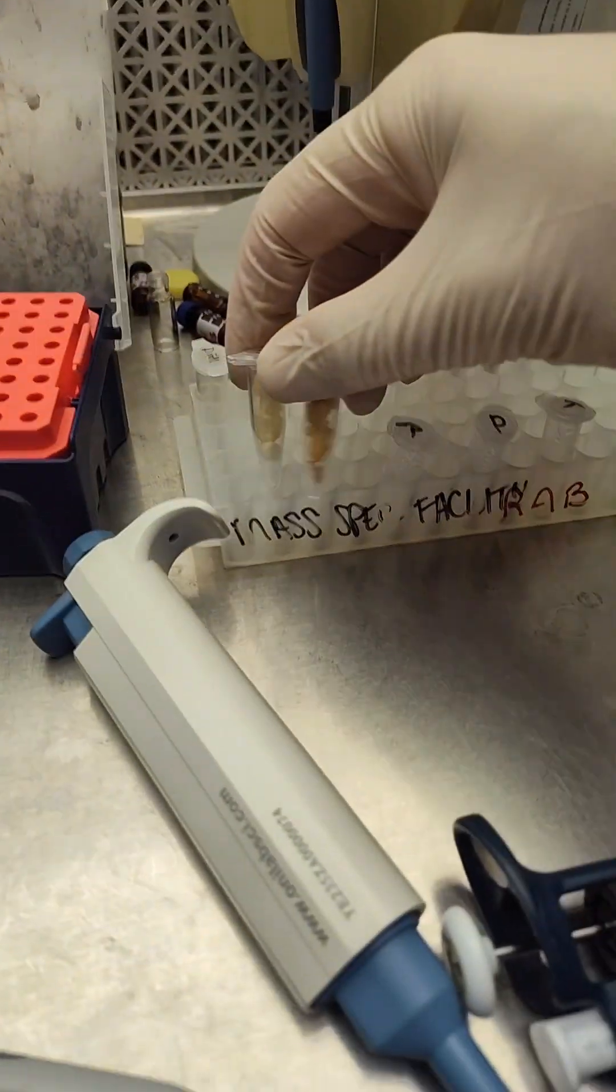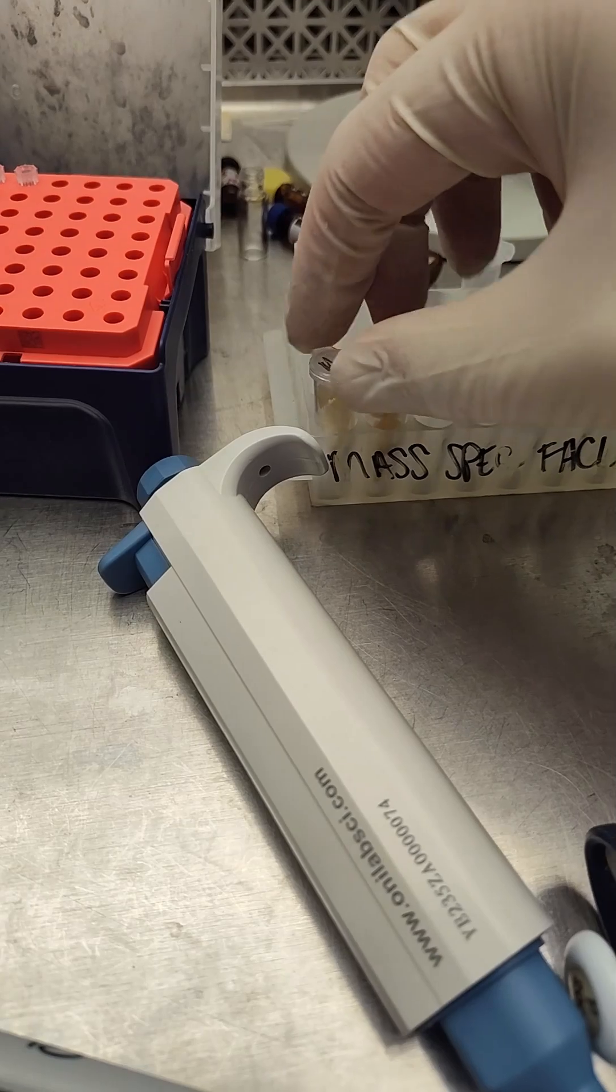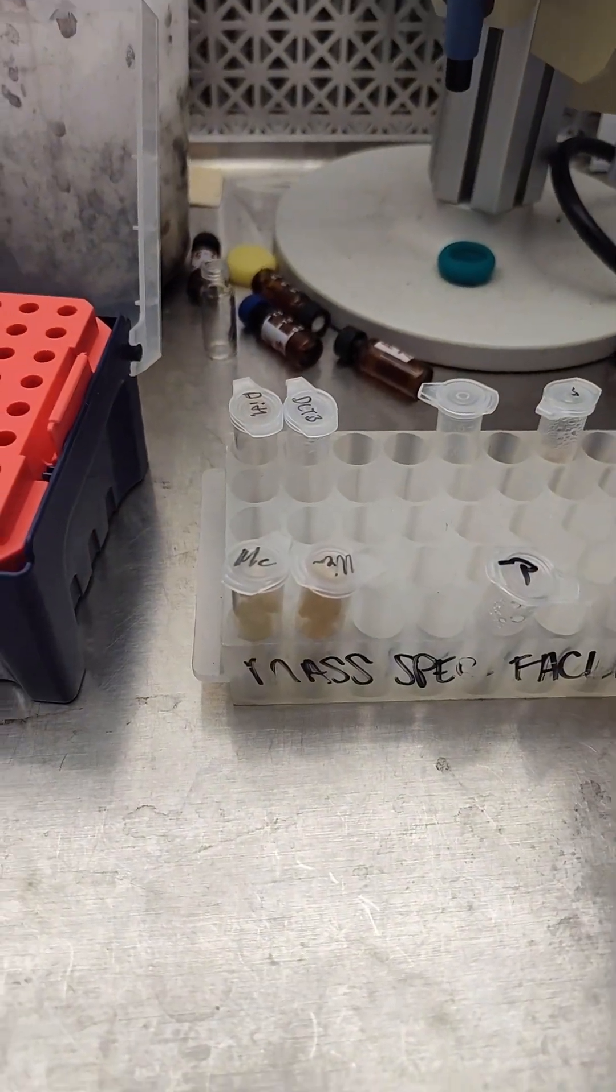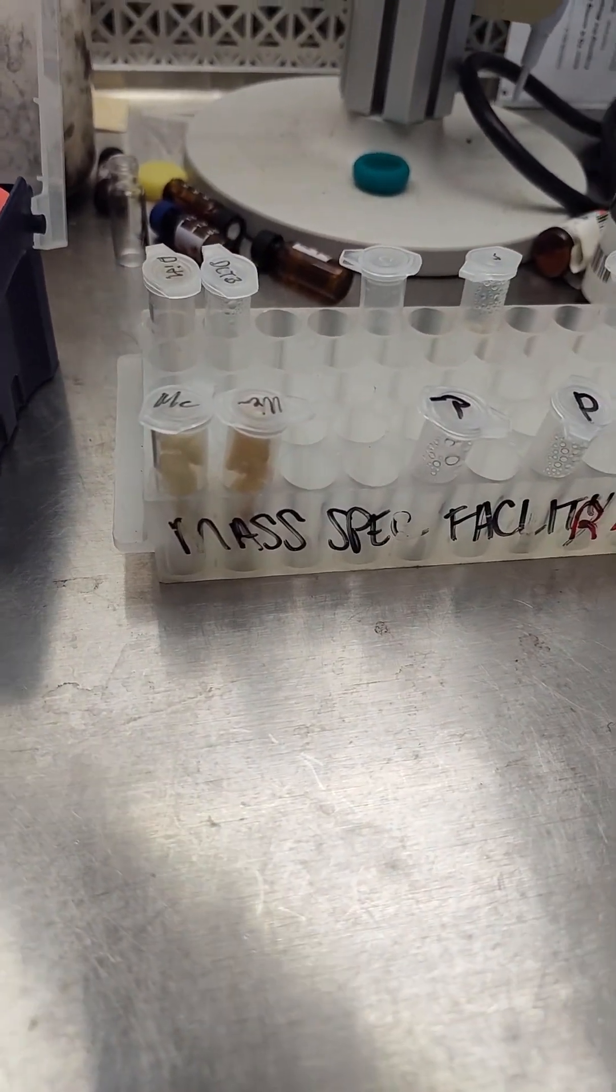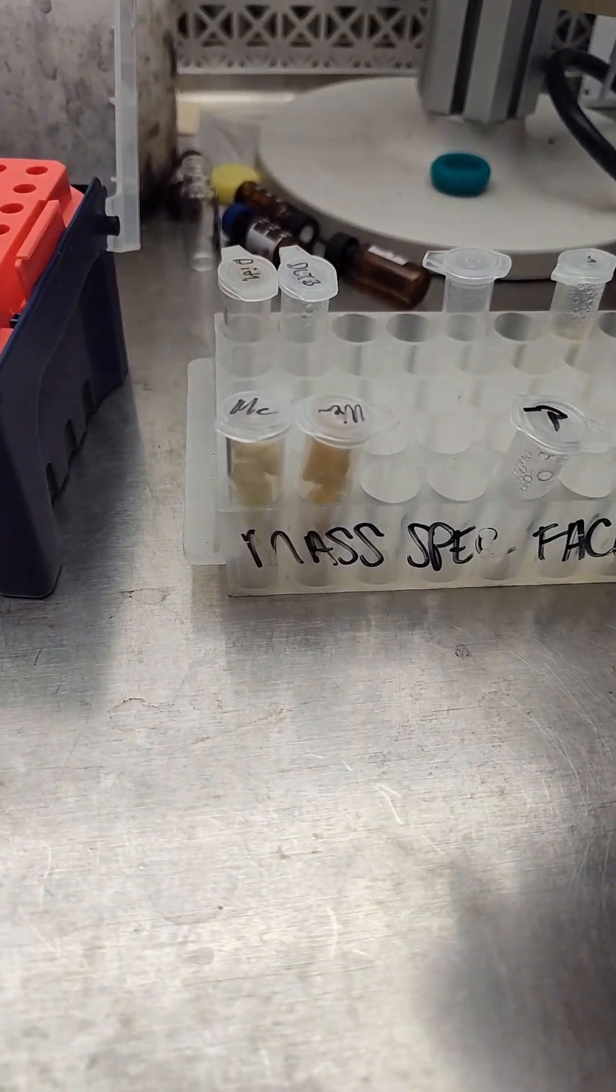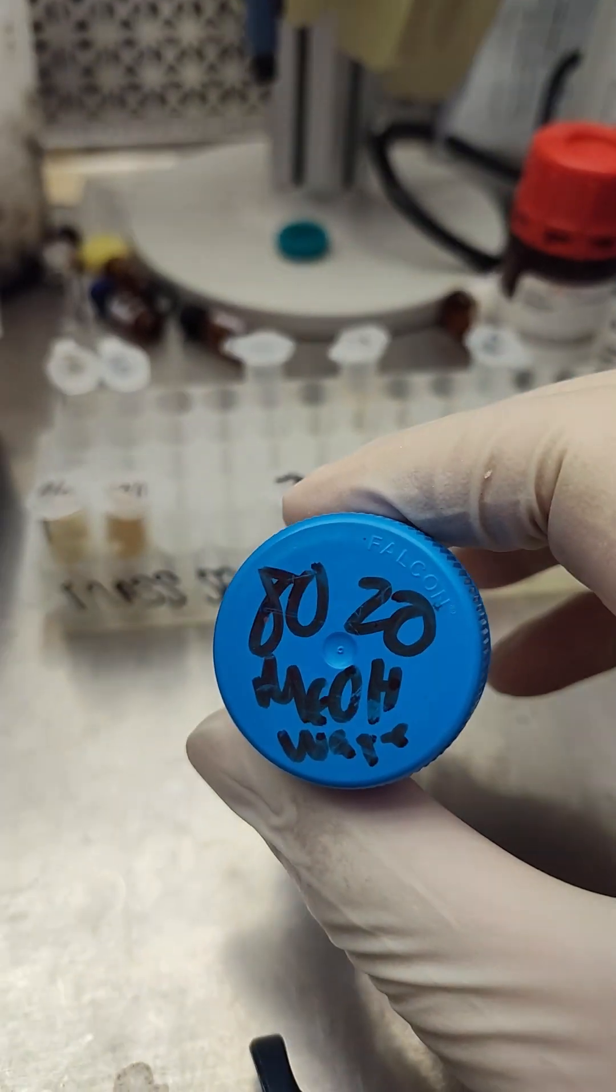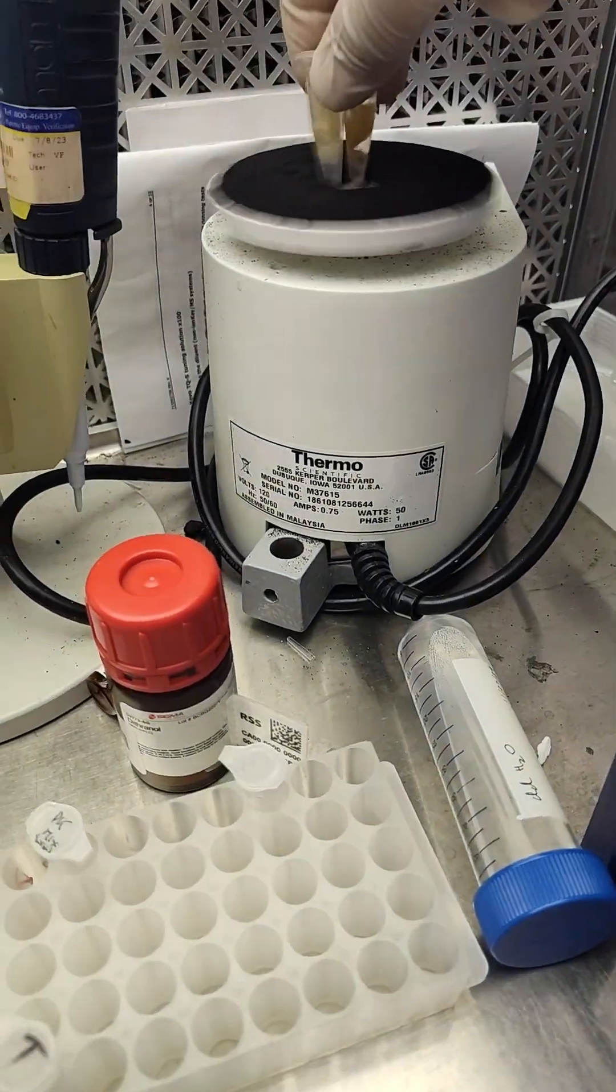Alright we're going to go ahead and add maybe a mil or maybe 800 microliters of this 80-20 methanol water and then we'll sonicate and extract these. Alright in the tubes and we're going to go ahead and vortex these.